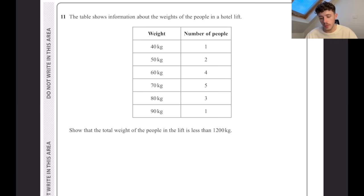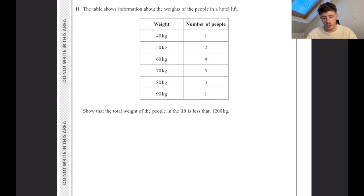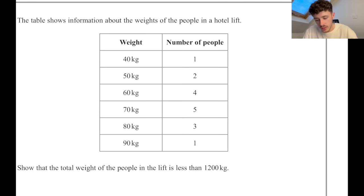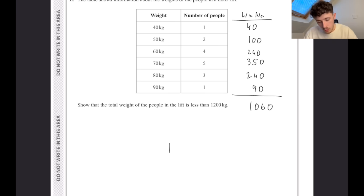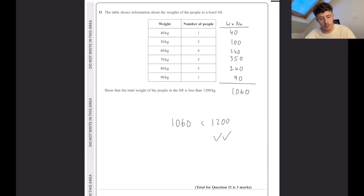The table shows information about the weights of people in a hotel lift. Show that the total weight of the people in the lift is less than 1200. So I would set up another column on the side to say weight times the number of people. That's going to be 40, 100, 4 times 60 is 240, 70 times 5 is 350, 240, and 90. We can then add those up - that leaves us with 1060. 1060 is less than 1200, so that is correct. Probably provide a little bit more of a sentence rather than just putting this, but that is all your workings and that should get you three marks.